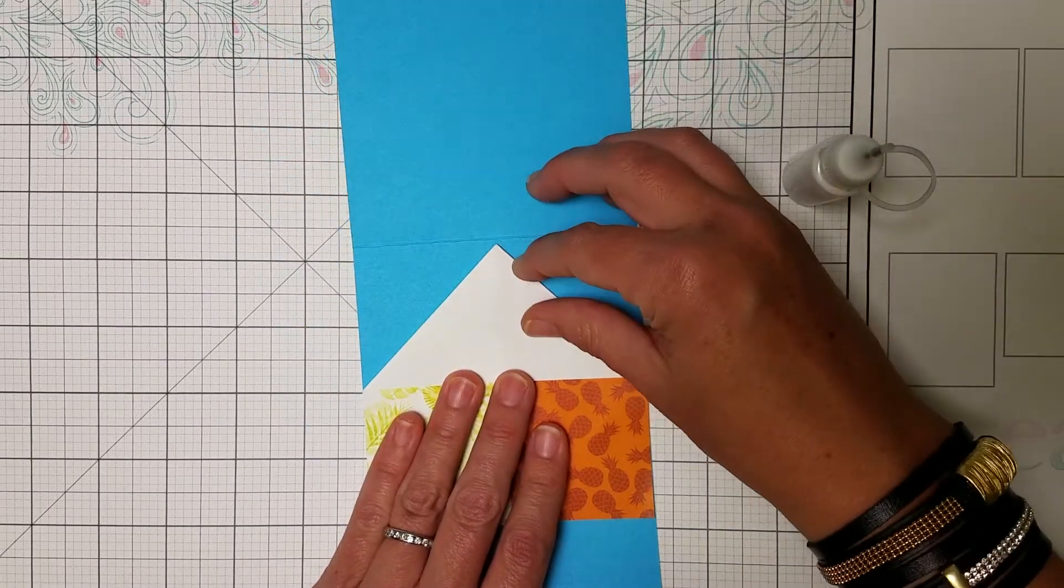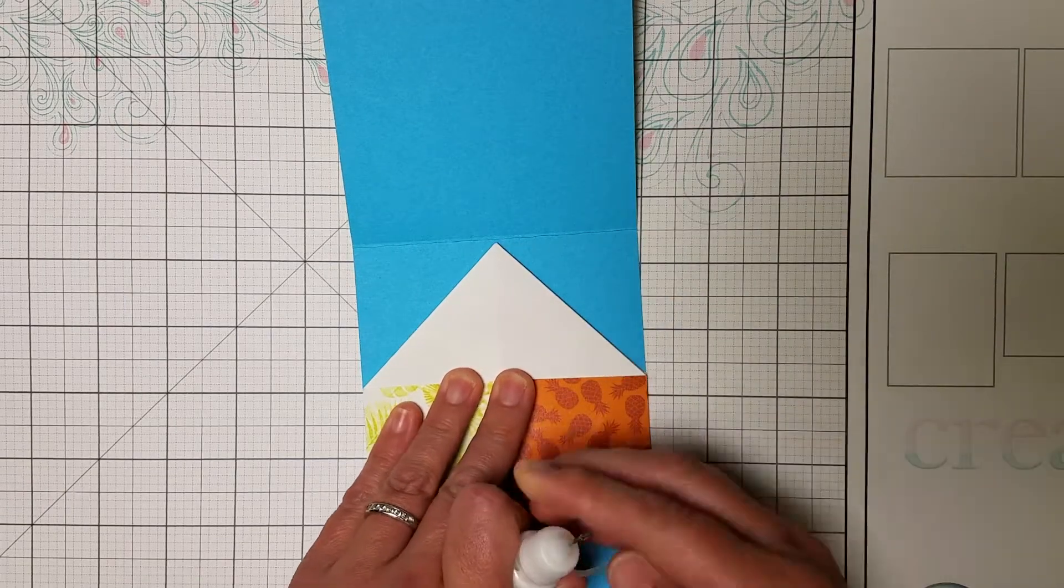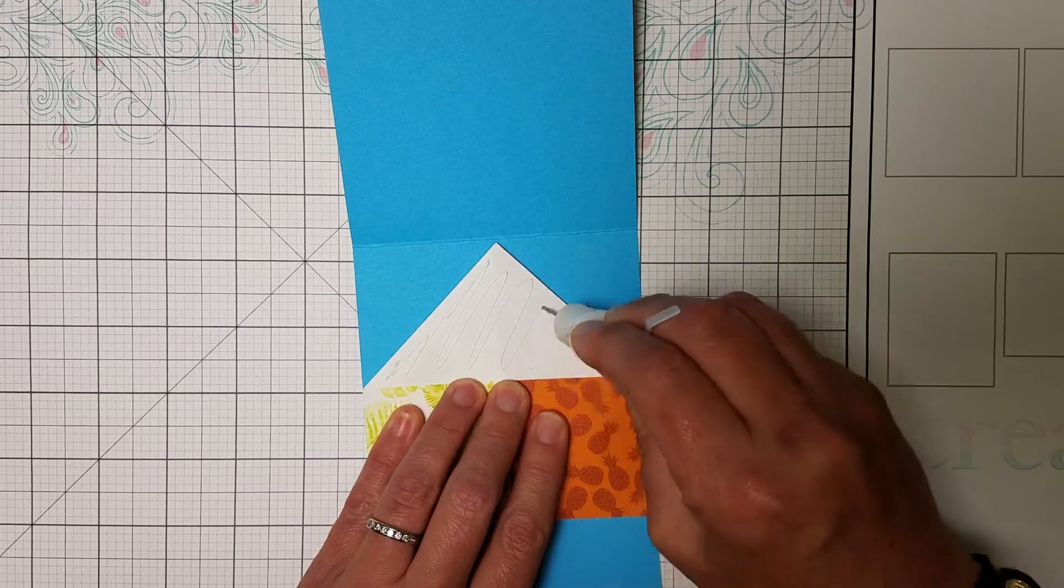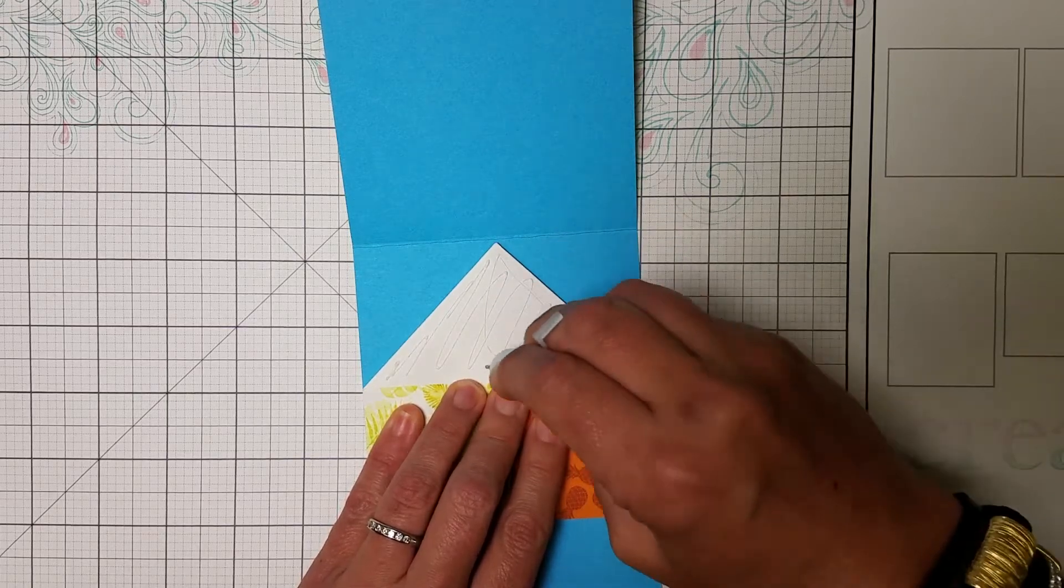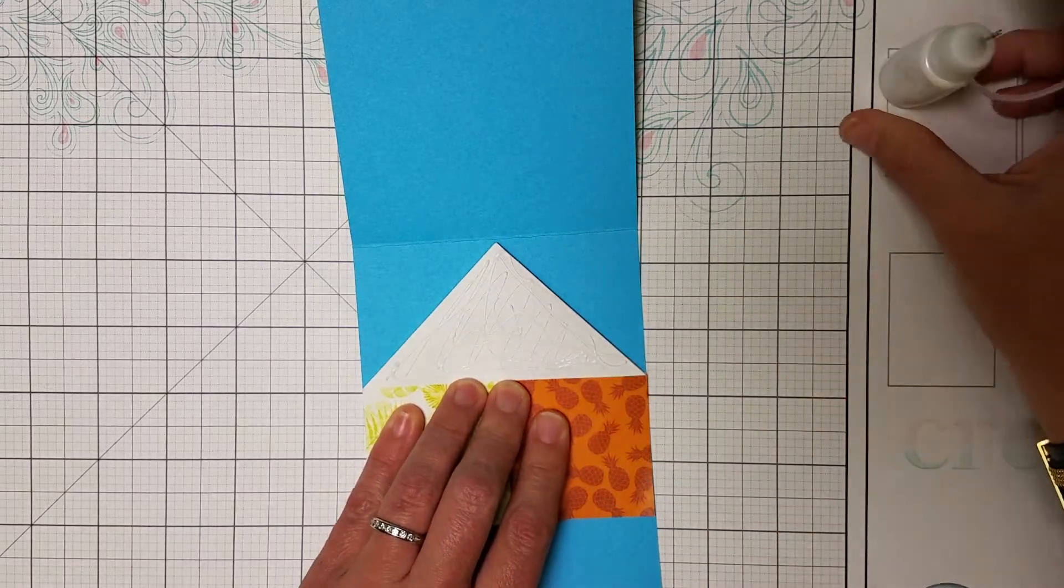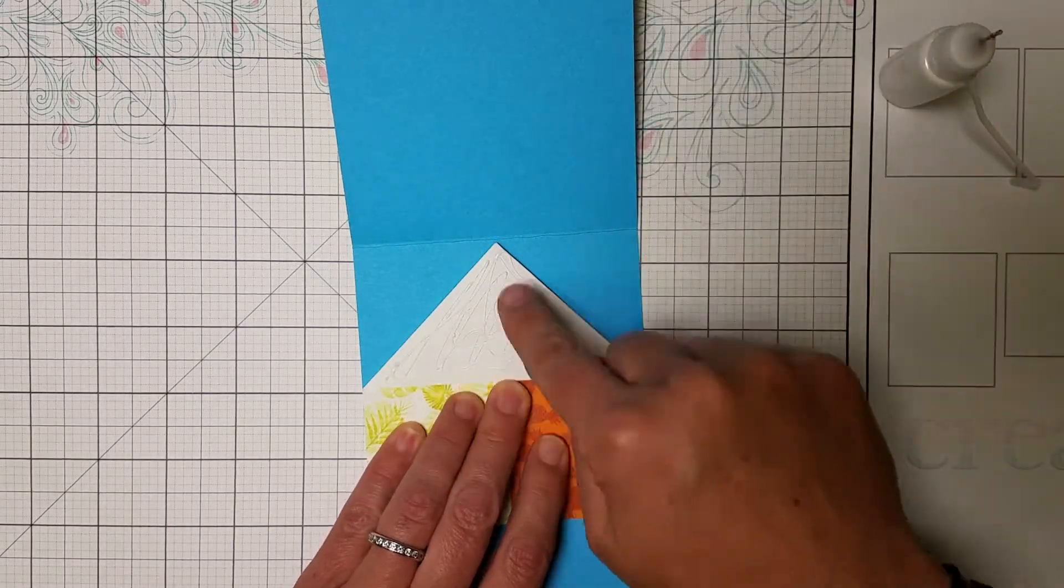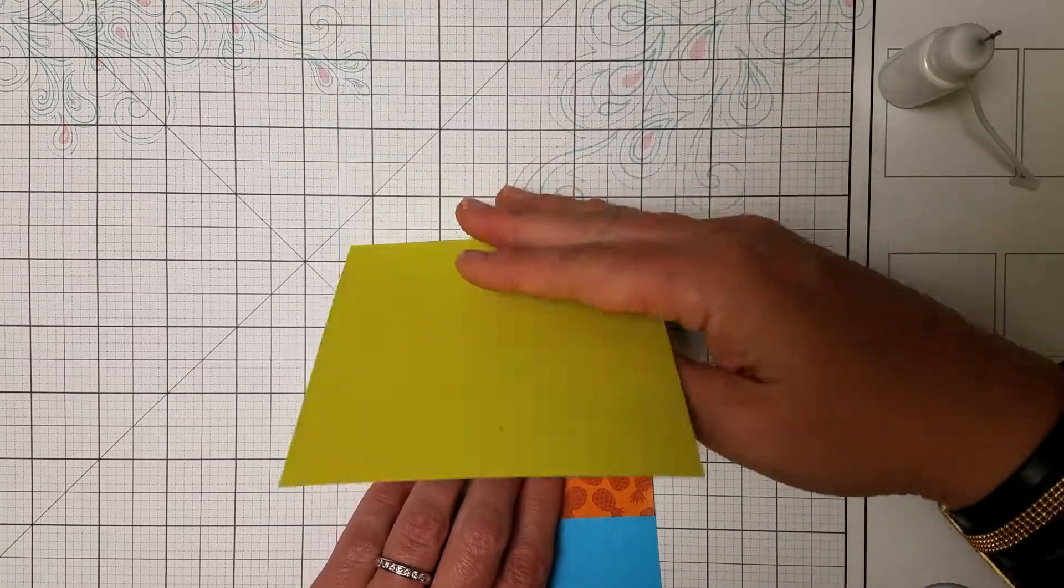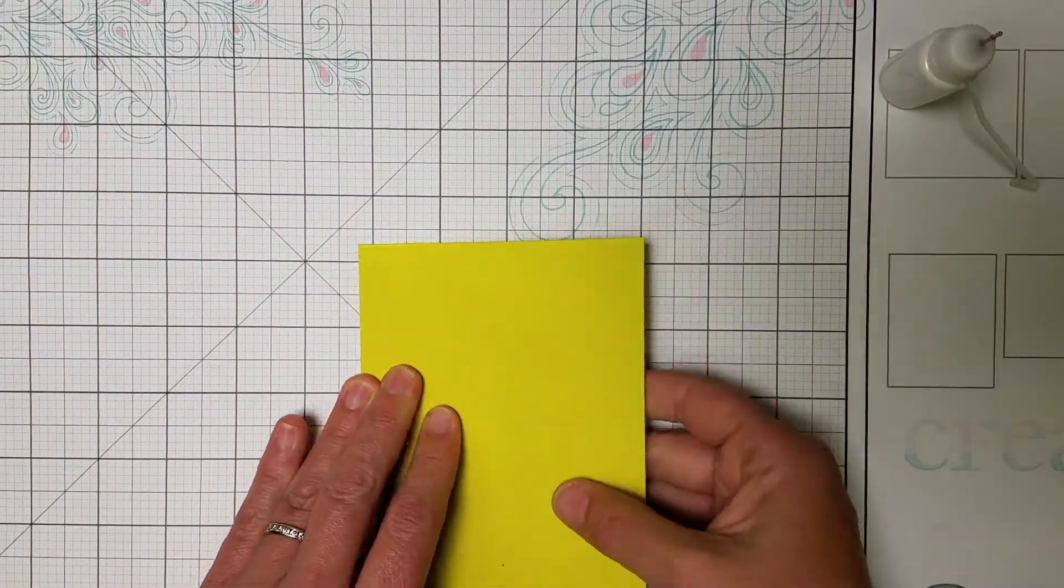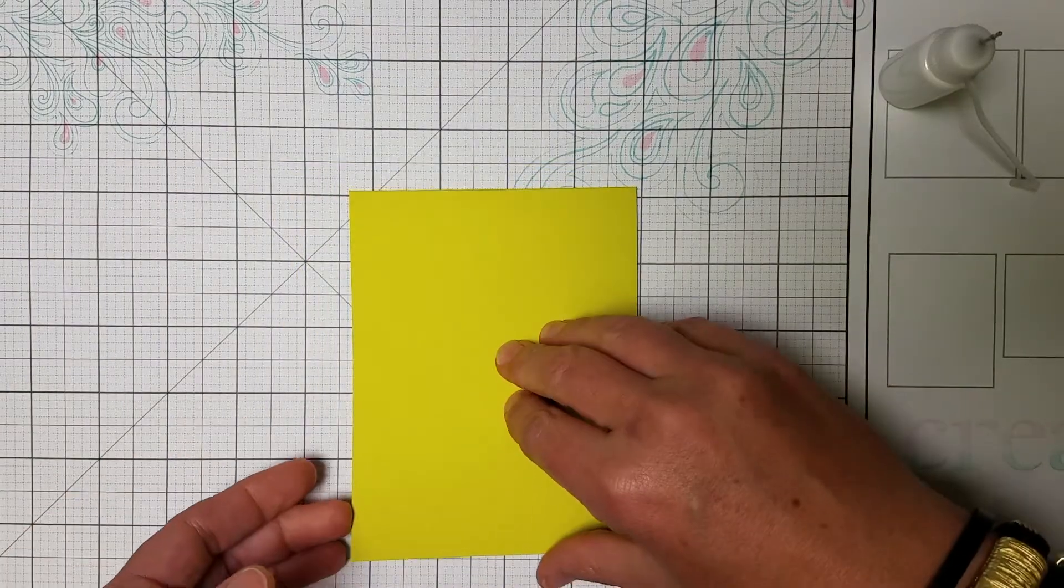And then this is really easy for glue placement. We're just going to add our book binding glue to this area. Now you can use other types of adhesive. I don't recommend an easy runner for this. I found that it's just not strong enough. Okay, so now I have adhesive placed on my triangular area, and I'll just close the card and burnish it into place.